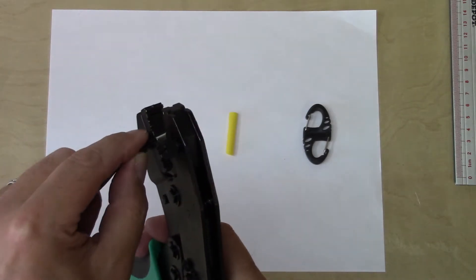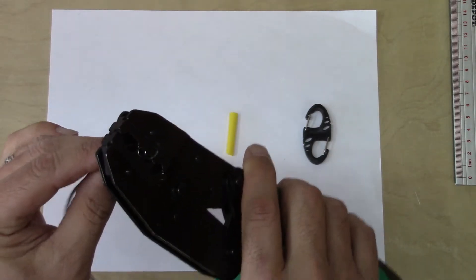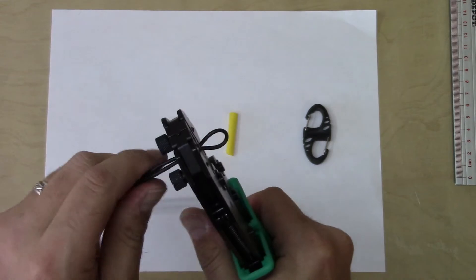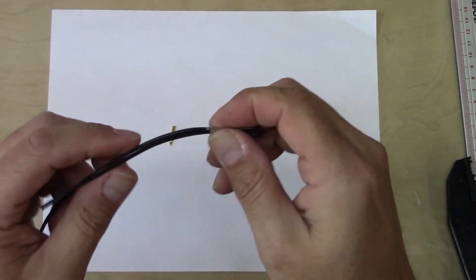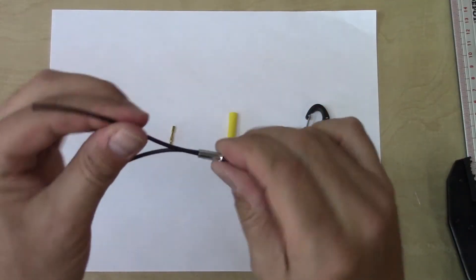I open up the crimper, I put it in position on the ferrule, give it a good pinch, and now we have a nice tight ferrule connection.